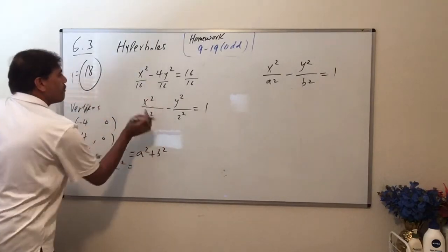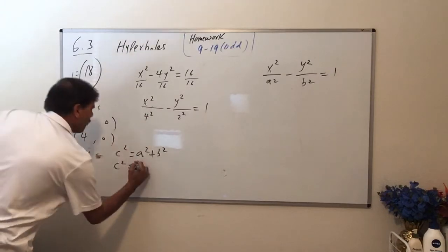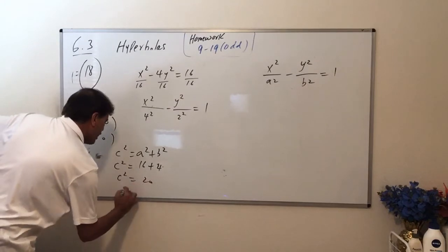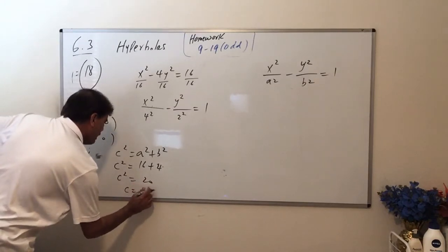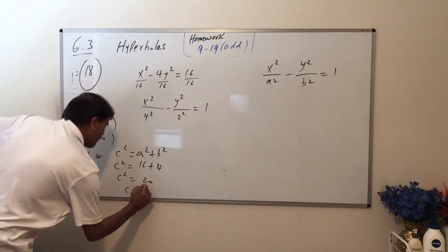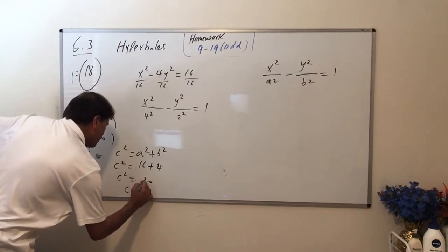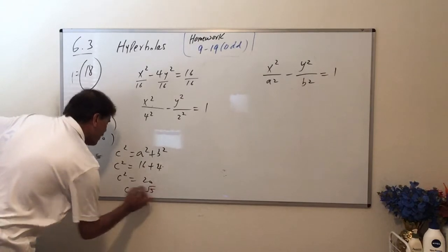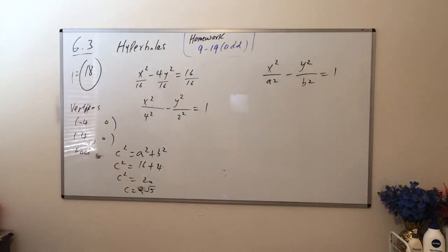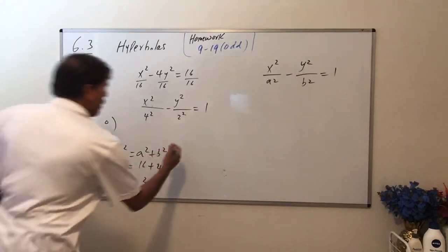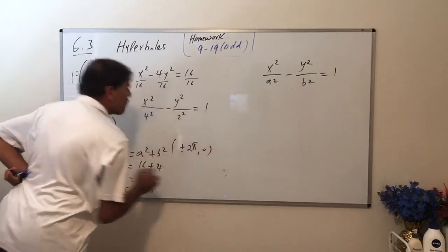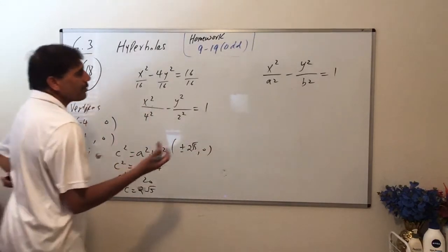So c² equals 20, and c equals plus or minus—5 times 4 is 20—so c equals 2 root 5, okay? Because 5 times 4 is 20, and the square root of 20 becomes the square root of 4 is 2, so 2 root 5. So it's going to be plus or minus 2 root 5 comma 0. That's your focus point.